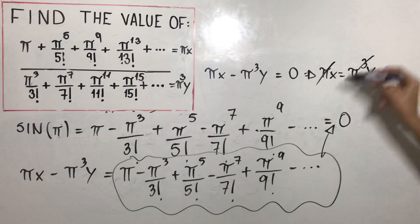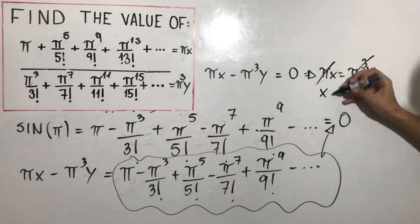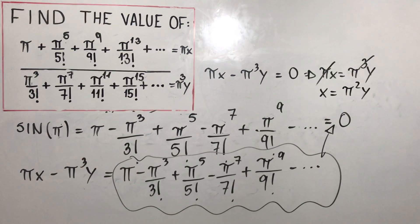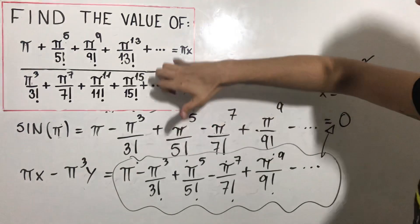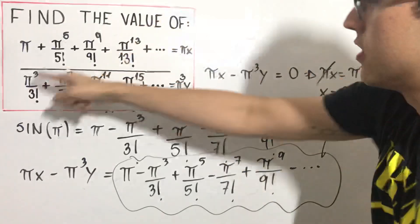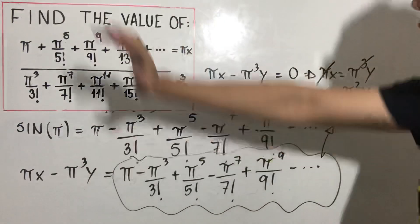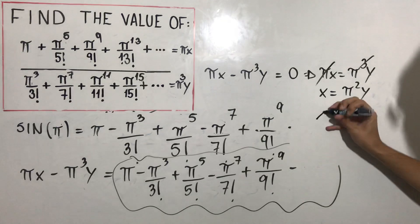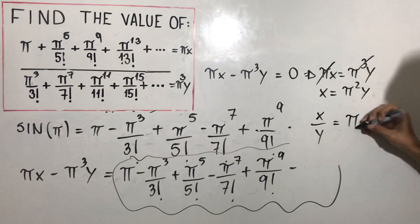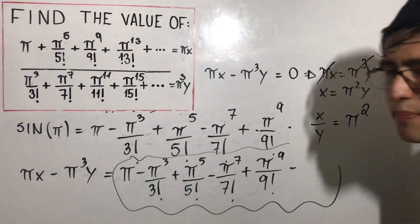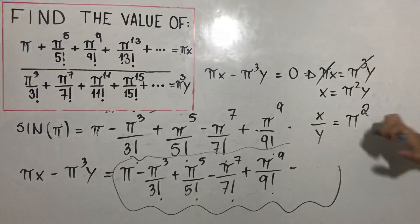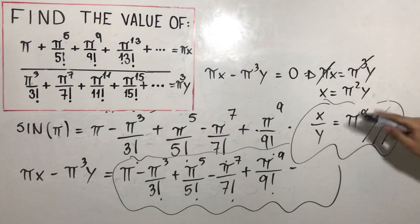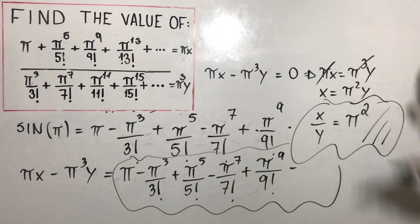So πx is equal to π³y. We can trim these things with no problem. X is equal to π²y. But we're looking for x divided by y. This whole thing is x, and this whole thing is y. So x divided by y is equal to π... No, pi is in Portuguese, I'm sorry. π squared.